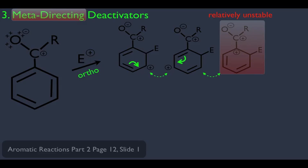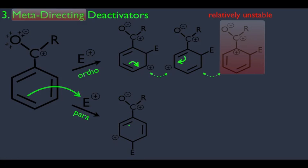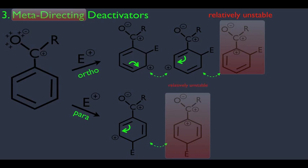If you add an electrophile para to the original substituent, you also get a resonance structure where the positive charge lands on the carbon bearing the substituent. So adding para also leads to a relatively unstable resonance intermediate. Drawing one more resonance structure by moving the electrons confirms this. So far, it looks like the electrophile would not want to add ortho or para because we land on a relatively unstable intermediate.